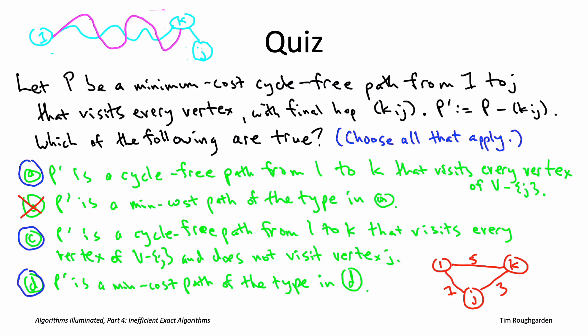But because we're assuming the magenta path is a sort of superior version of the prefix p prime, so it goes from one to k, it's cycle-free, visits all the vertices of v minus j, does not visit j. That means when we take the magenta path, plug on that last k comma j hop, we get a cycle-free path, crucially. Now it visits every vertex, including j, and its cost is strictly less than that of the light blue path. But that's a contradiction because the light blue path was the minimum cost such path.